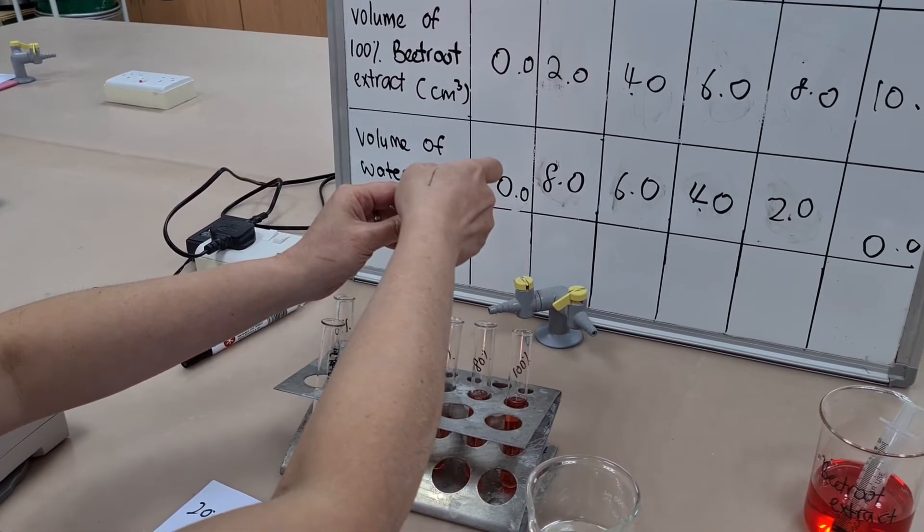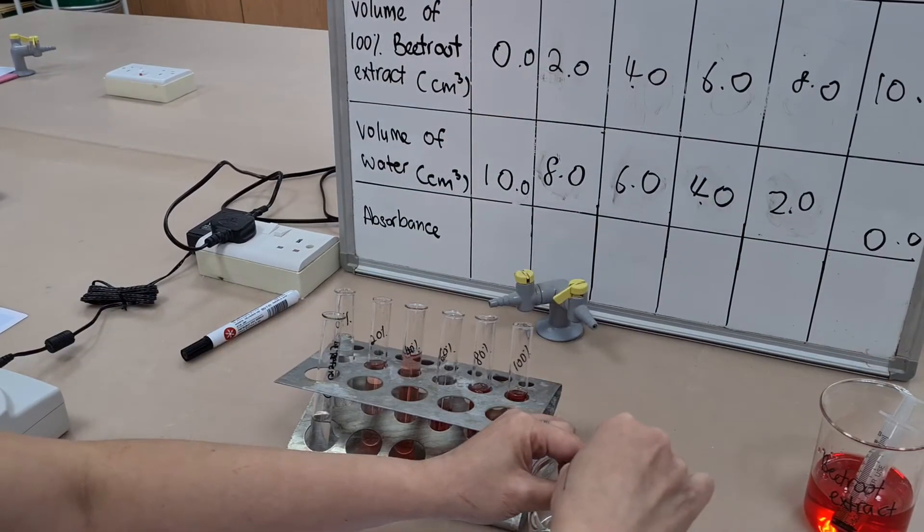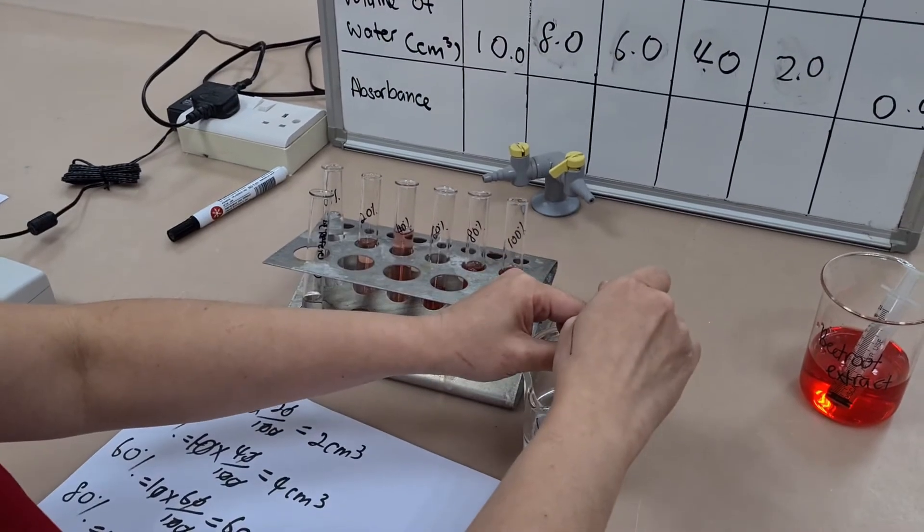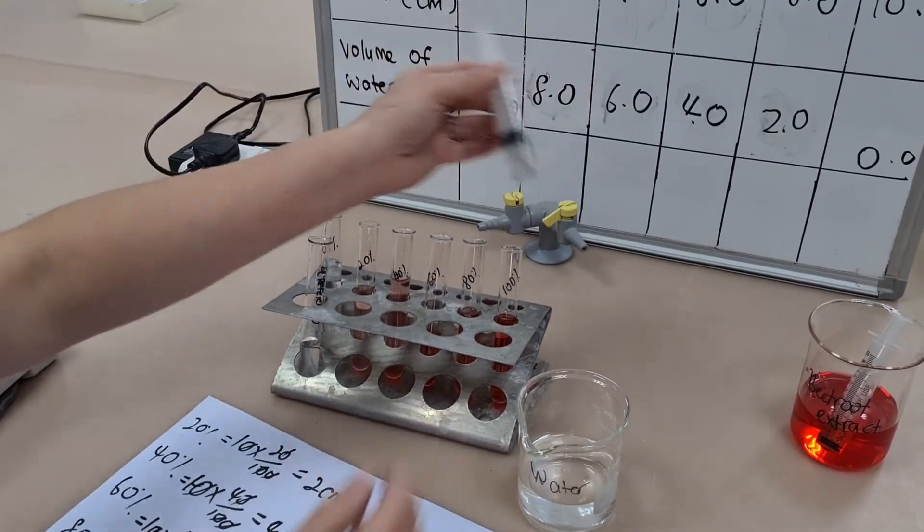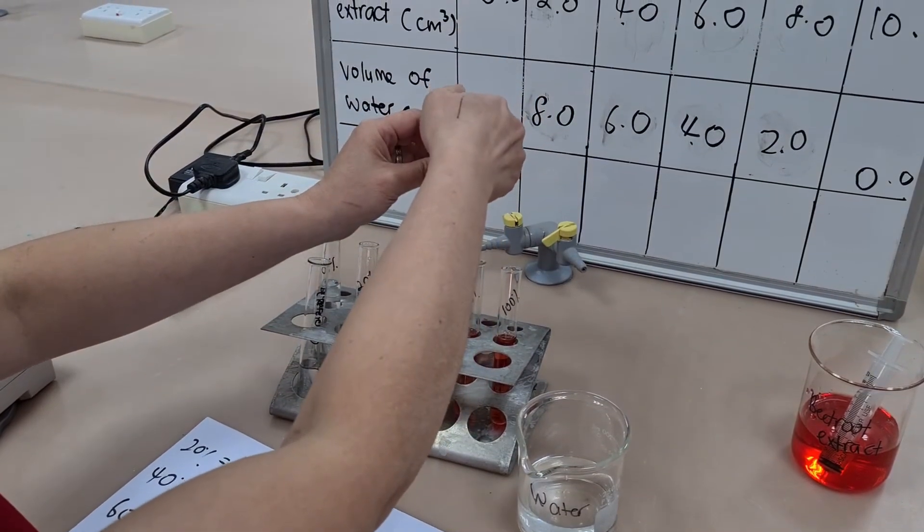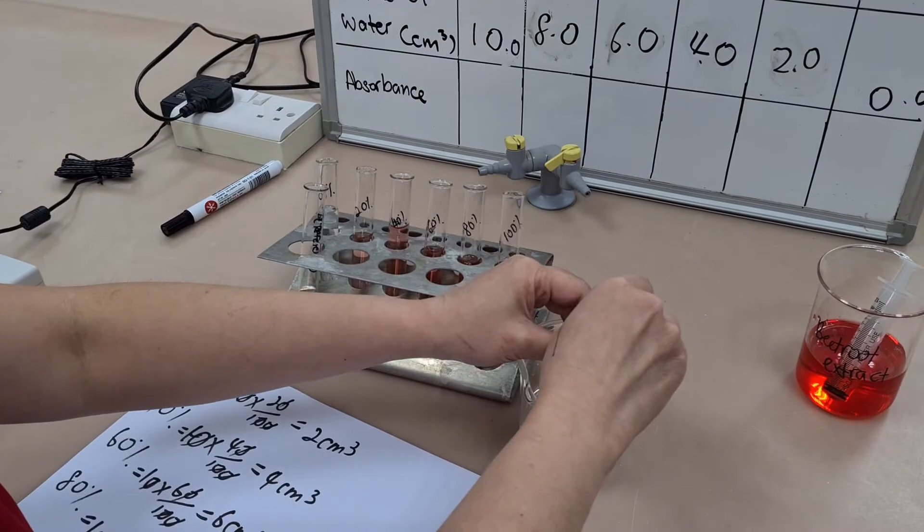The same technique is used here as we've seen before. We use one syringe and we fill all of our test tubes with water first before switching to the other syringe and filling them with the beetroot extract. All test tubes are clearly labeled.